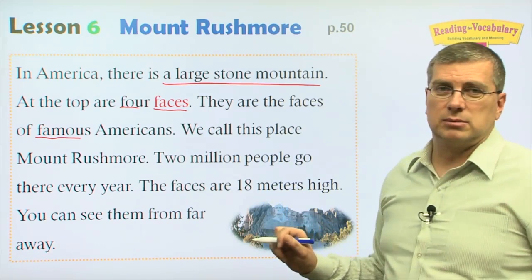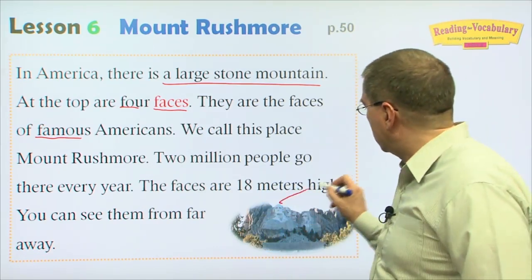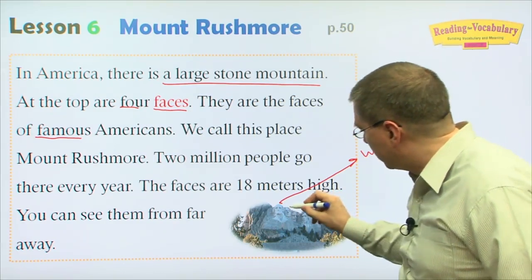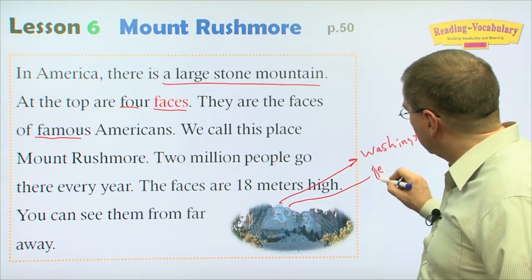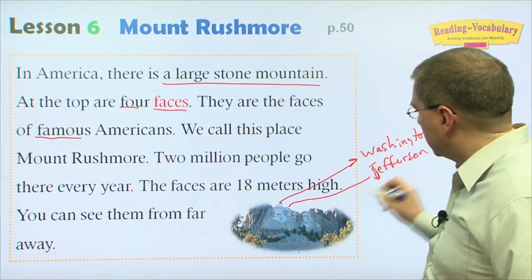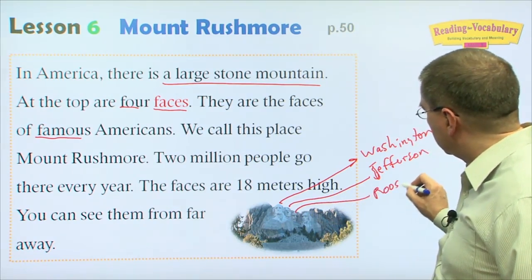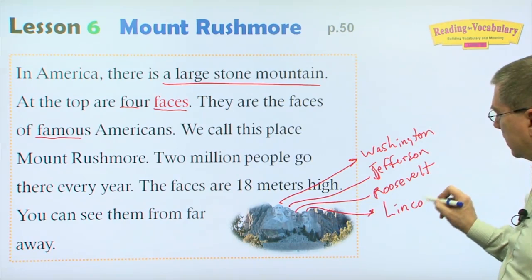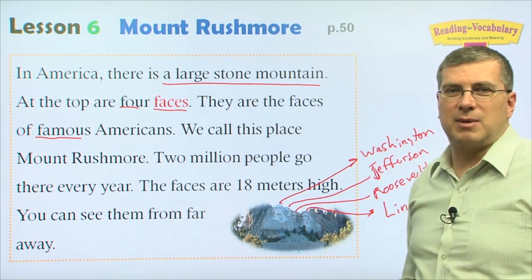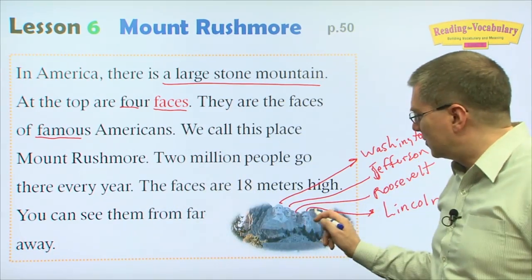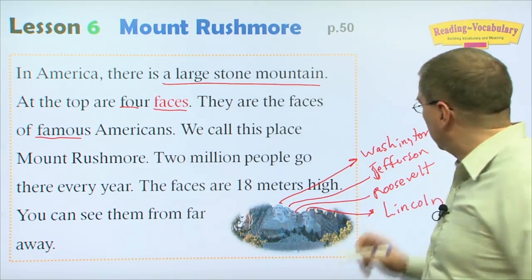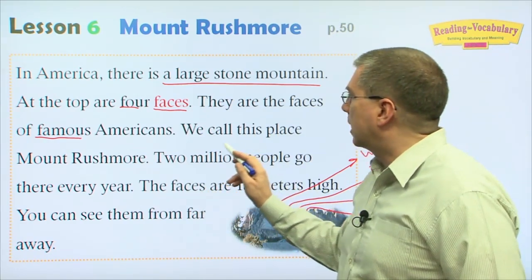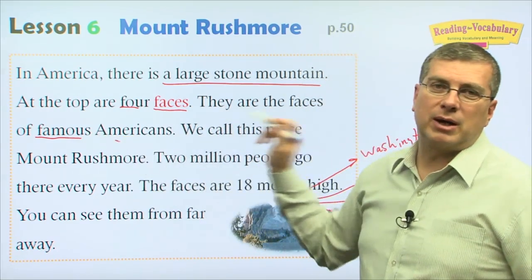By the way, who are these people? These are all presidents. This is Washington, over here we have Jefferson, we have Roosevelt, and this guy a bit alone — that is Lincoln. It's interesting that he's alone. He had a very difficult time as president and was kind of unique among presidents. These are all past, very famous American presidents.